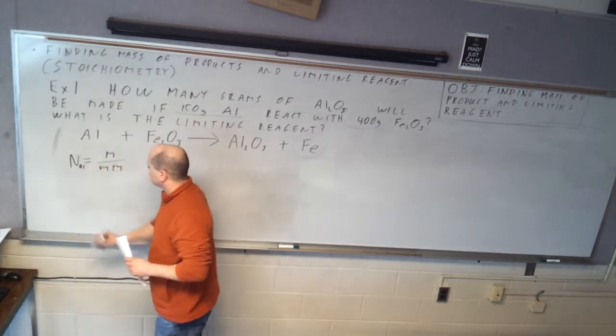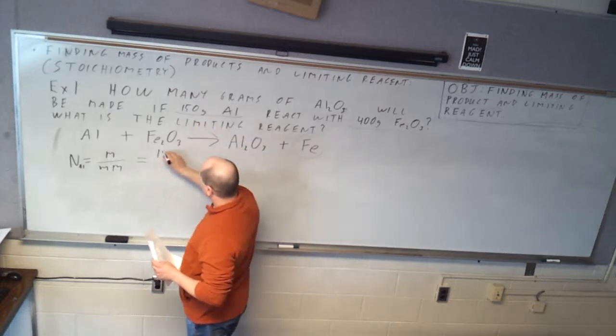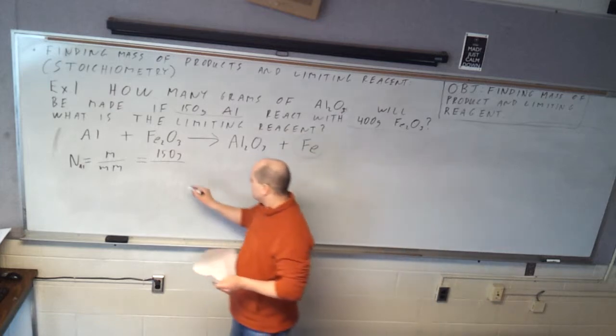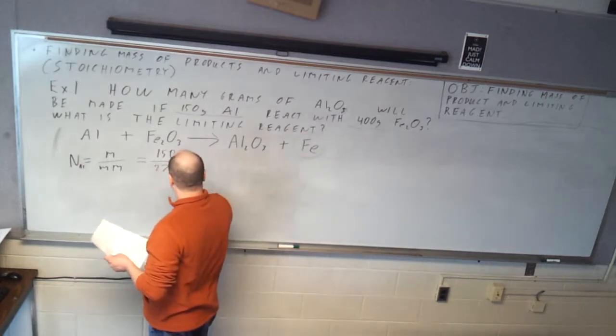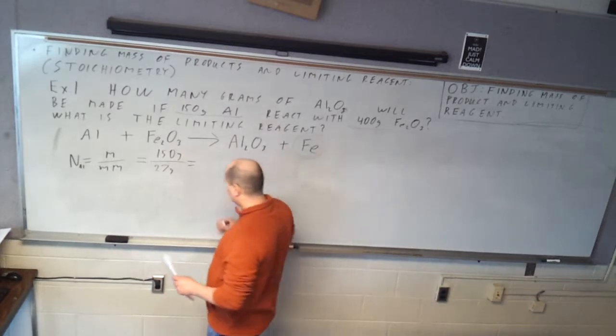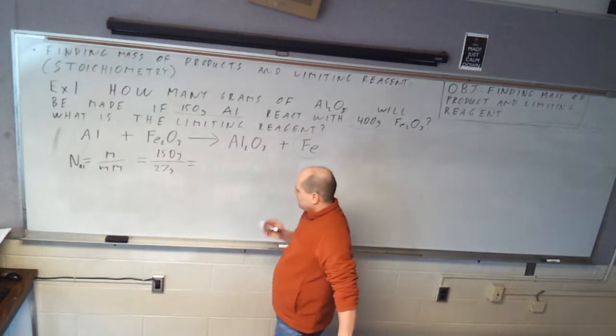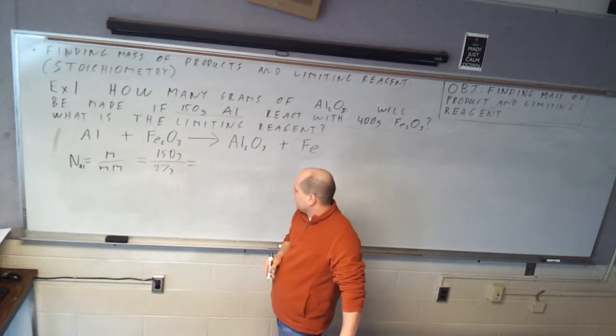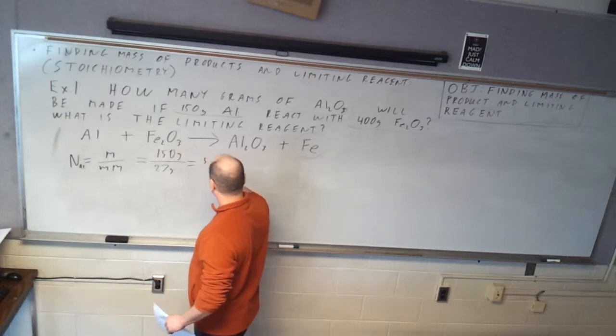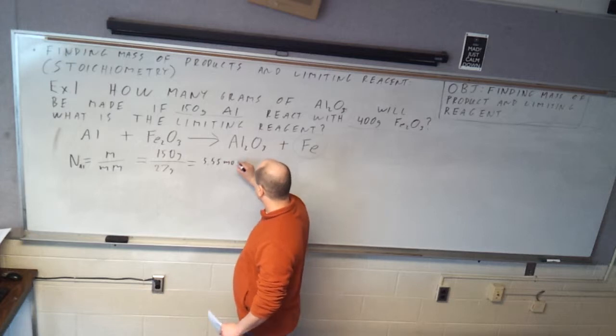Number of moles is mass divided by molar mass. Let's put a little Al subscript here for aluminum. So this is going to be 150 grams divided by the molar mass of aluminum, which is 27. So if we do 150 by 27, what's that come out to? Alright, 5.55. Let's stop there. And that's moles of aluminum.